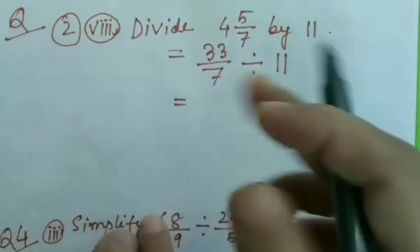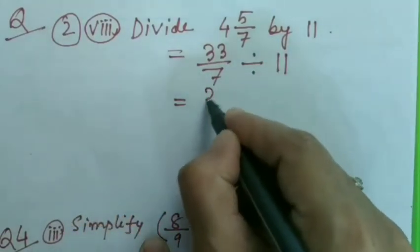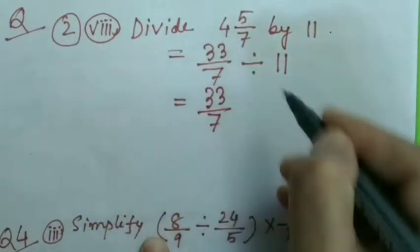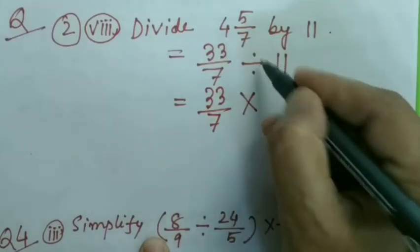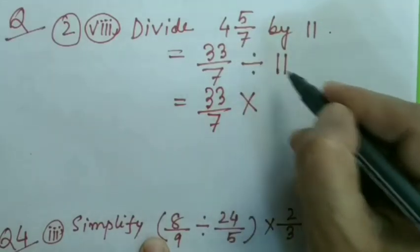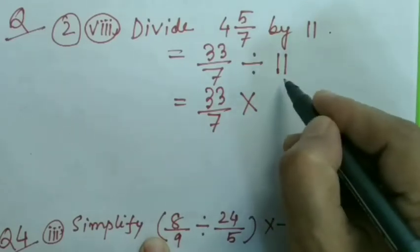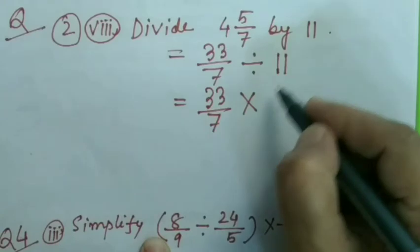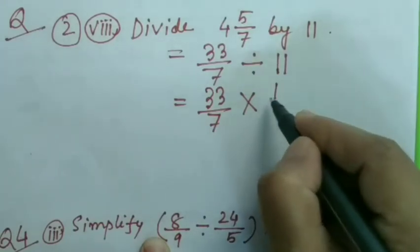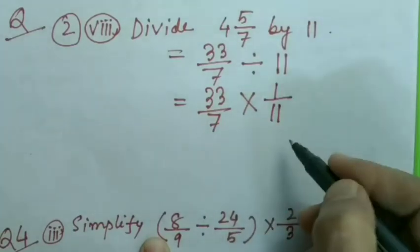I'm changing the sign from division to multiplication, and I'm changing this to its reciprocal. The denominator of 11 is 1, so I'm writing 1/11. This is the reciprocal of 11, and I've changed the sign also.